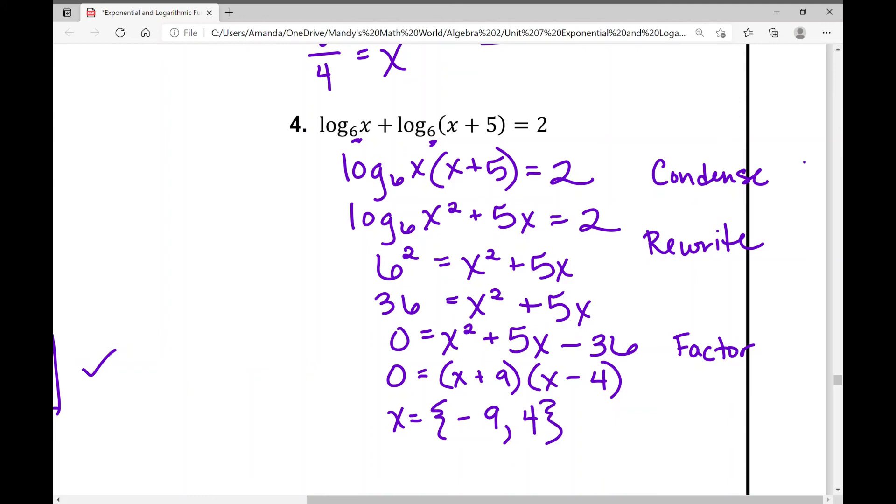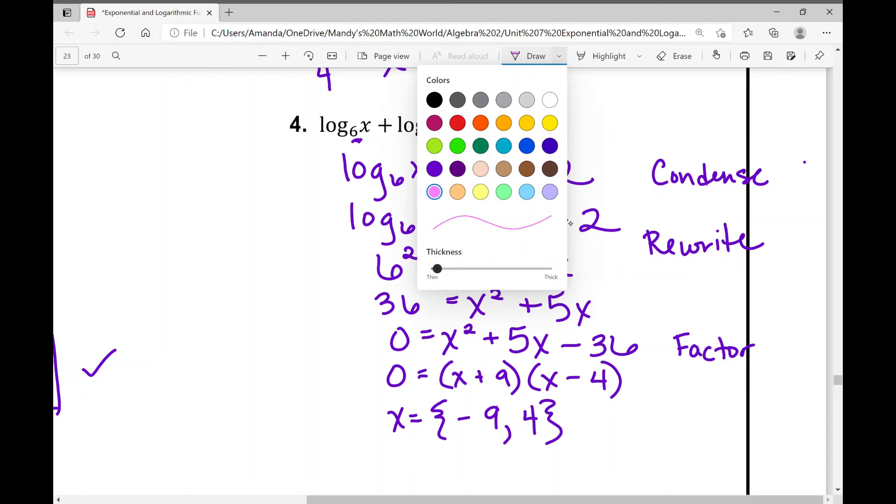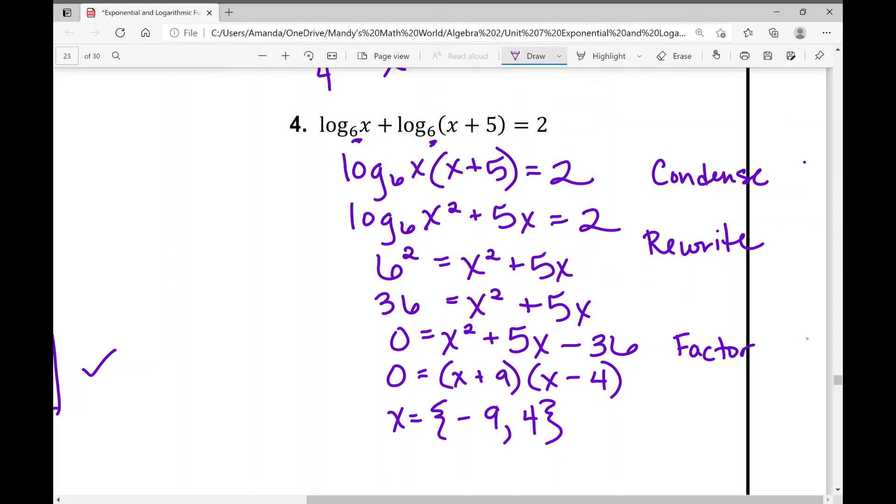And here's where we're going to be checking for our extraneous solution. So remember, your answer cannot create the log of a negative number. So I'm going to plug these into our logarithms at the top. So the first one I'm going to look at is negative nine. Log base six of negative nine. Well, that's not going to work because your answer cannot create the log of a negative number, and negative nine does.